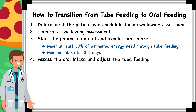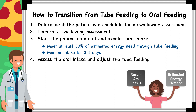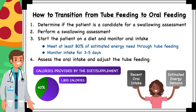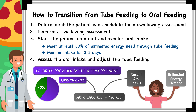After three to five days of monitoring oral intake, it's time to assess the oral intake and adjust the tube feeding. Assessment of oral intake takes place by comparing the patient's recent oral intake to their estimated energy demand. To do this, you need to know approximately how many calories the diet and supplement provide each day. For example, if a patient consumes an average of 40% of a puree diet and that diet provides 1,800 calories, you can estimate an average intake of 720 calories per day. This is a rough approximation, so avoid getting too caught up in the numbers.